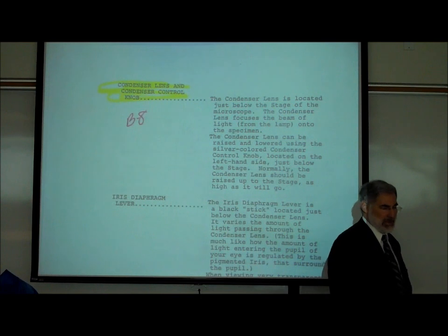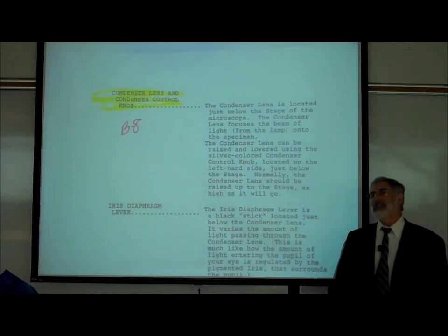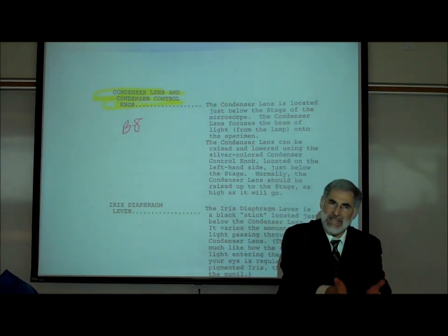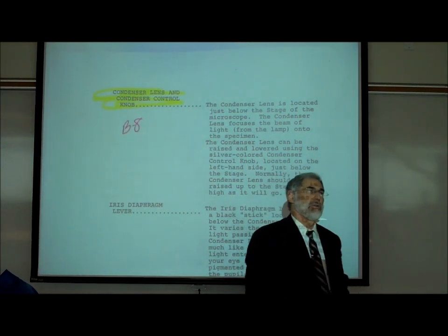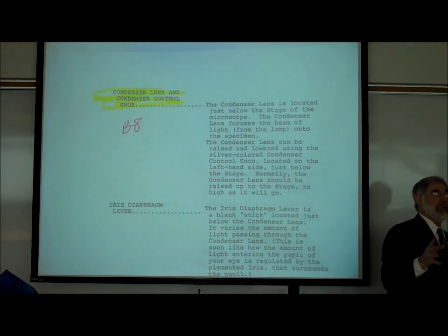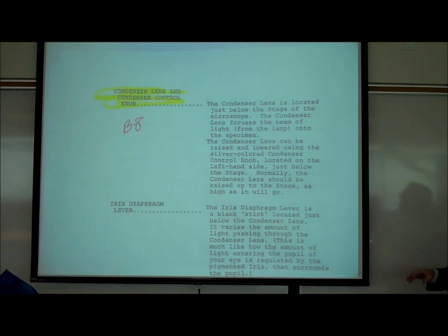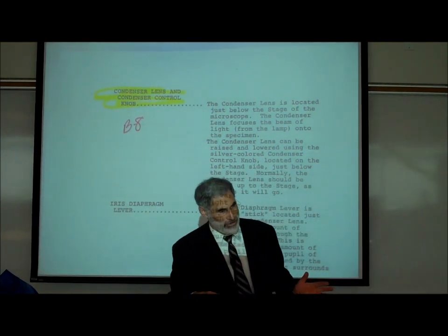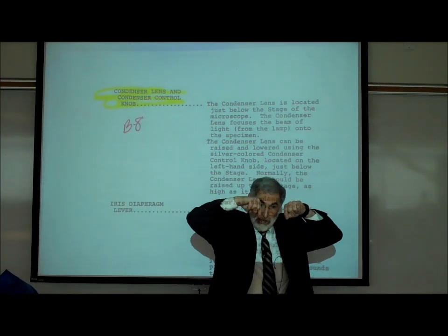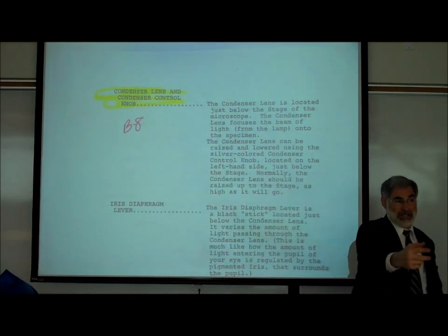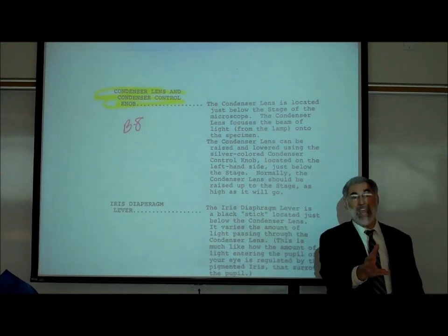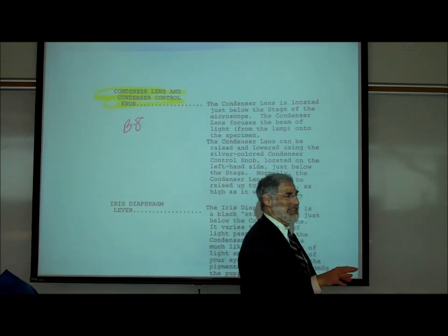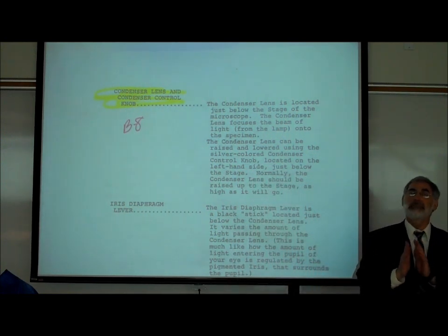When you turn that black knob, raising the condenser lens up or down, you use it to focus the beam of light better on the specimen. This is the only lens on your microscope that has nothing to do with magnification — the condenser lens's purpose is not to make something look bigger, but to focus the beam of light.